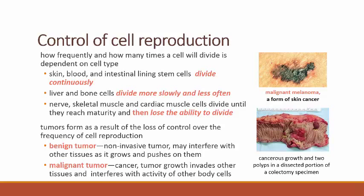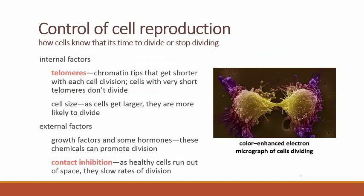Here are two pictures of malignant tumors: a malignant melanoma, one of the scariest of the skin cancers, and some cancerous growth on the interior of a colon removed in a process called a colectomy. Here also is the information about telomeres, contact inhibition, growth factors, and how cells getting too large may be encouraged to divide.